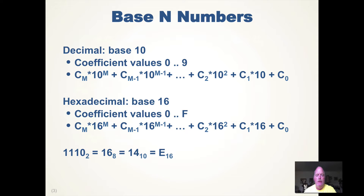Hexadecimal is very valuable in dealing with binary data; it makes it easy to visualize the data. It's base 16, with coefficient values 0 through 9 and then A through F, giving us 16 digits. For example, binary 1110 (subscript 2) equals 16 in octal, equals 14 in decimal, and equals E in hexadecimal.